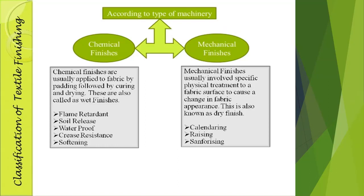Mechanical finishes usually involve specific physical treatment to the fabric surface to cause a change in fabric appearance. This is also known as dry finishing. Because physical treatments or machines are used to introduce properties to the fabric, we are not using any wet products or chemicals in this finishing, so these come under the category of dry finishing.